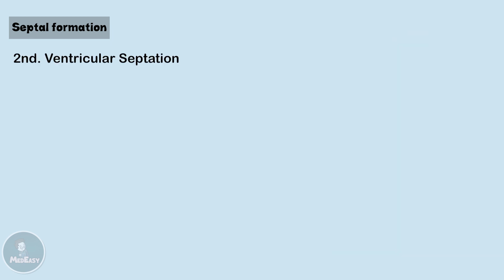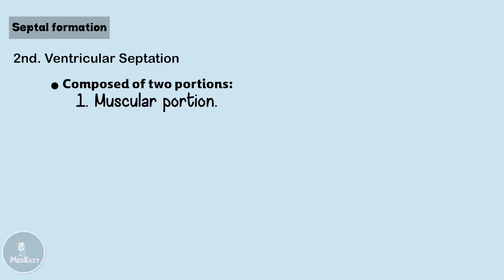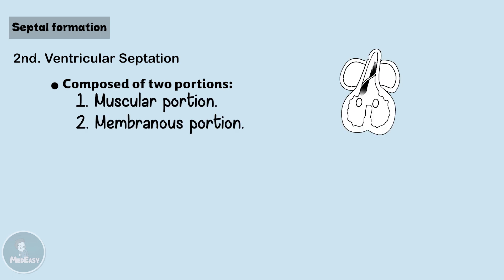As for the ventricular septum, it's composed of two portions: a muscular portion and a membranous portion. The muscular portion develops from the floor of the primitive ventricle and grows upward towards the AV cushion. The foramen remaining is called the interventricular foramen.